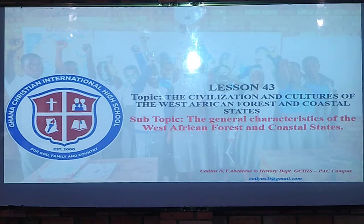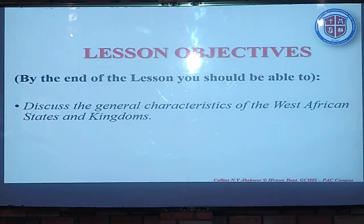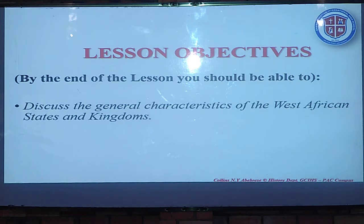Specifically, we are looking at the general characteristics of the West African forests and coastal states — all the kingdoms that emerged in the West African coasts and forests. What were the general characteristics? What would you use to identify them? By the end of the lesson you should be able to discuss the general characteristics of the West African states and kingdoms — something which was common to all of them.